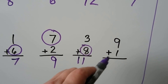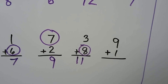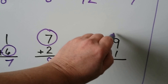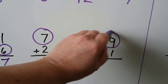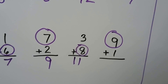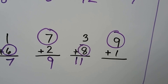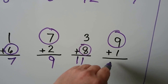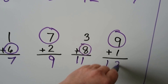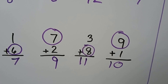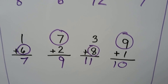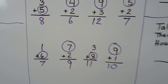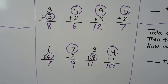9 plus 1 — 9 is the greater addend. We start with the 9 and count on 1: 9, 10. Circle the greater addend and then count on.